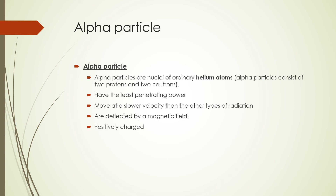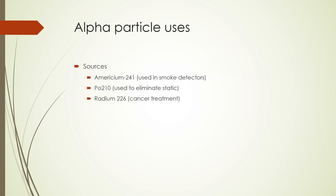Alpha particles are nuclei of ordinary helium atoms, consisting of two protons and two neutrons. They have the least penetrating power and move at slower velocity than other types of particulate radiation. They are deflected strongly by a magnetic field and are positively charged. Alpha particles have many uses: in smoke detectors where the source is americium-241, polonium-210 to eliminate static in industrial processes, and radium-226 for cancer treatment. Polonium-210 is radiotoxic when ingested because of the high energy alpha particles that irradiate cells in the body.